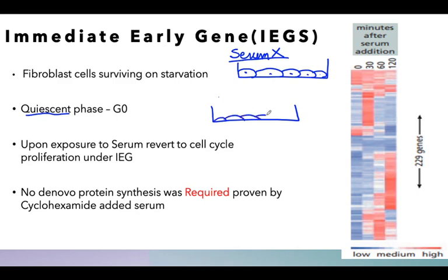We observe a sudden surge of certain genes inside these cells, called immediate early genes. Upon serum introduction, a surge of these genes was noticed at 0, 30, and 60 minutes. The red color you see indicates amplification of certain genes, while the bluish color indicates late or reduced expression. Overall, roughly 229 genes in fibroblast cells, upon starvation and re-exposure to serum, showed immediate early gene transcription.